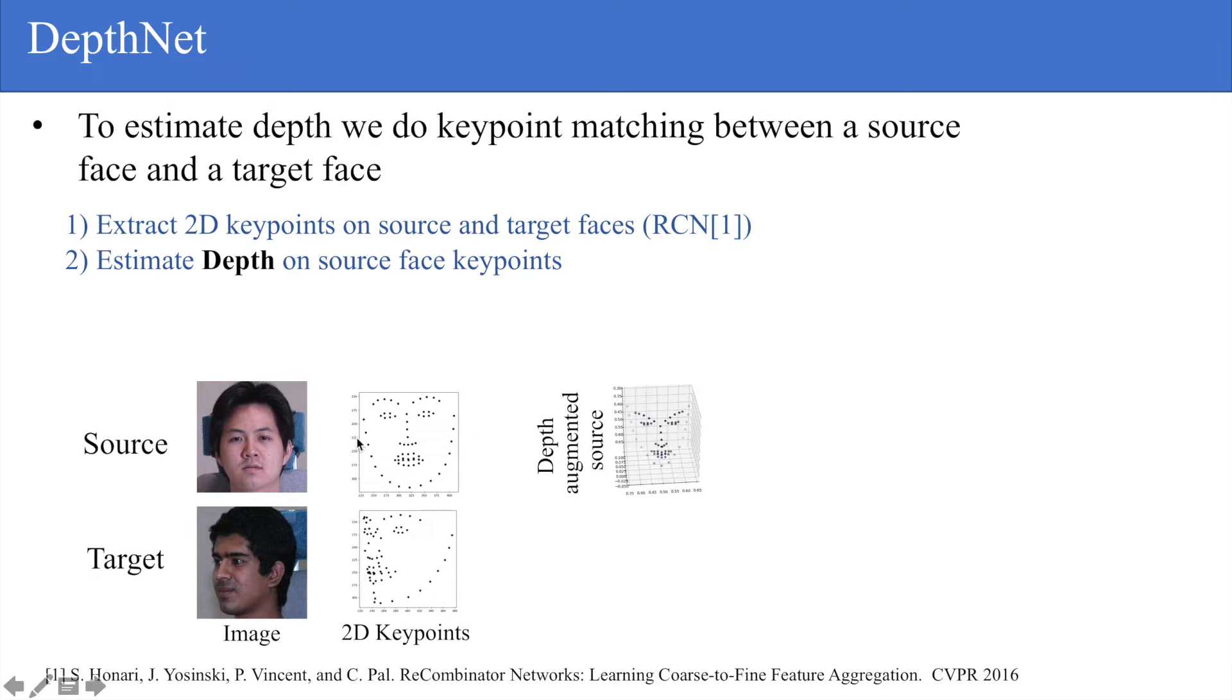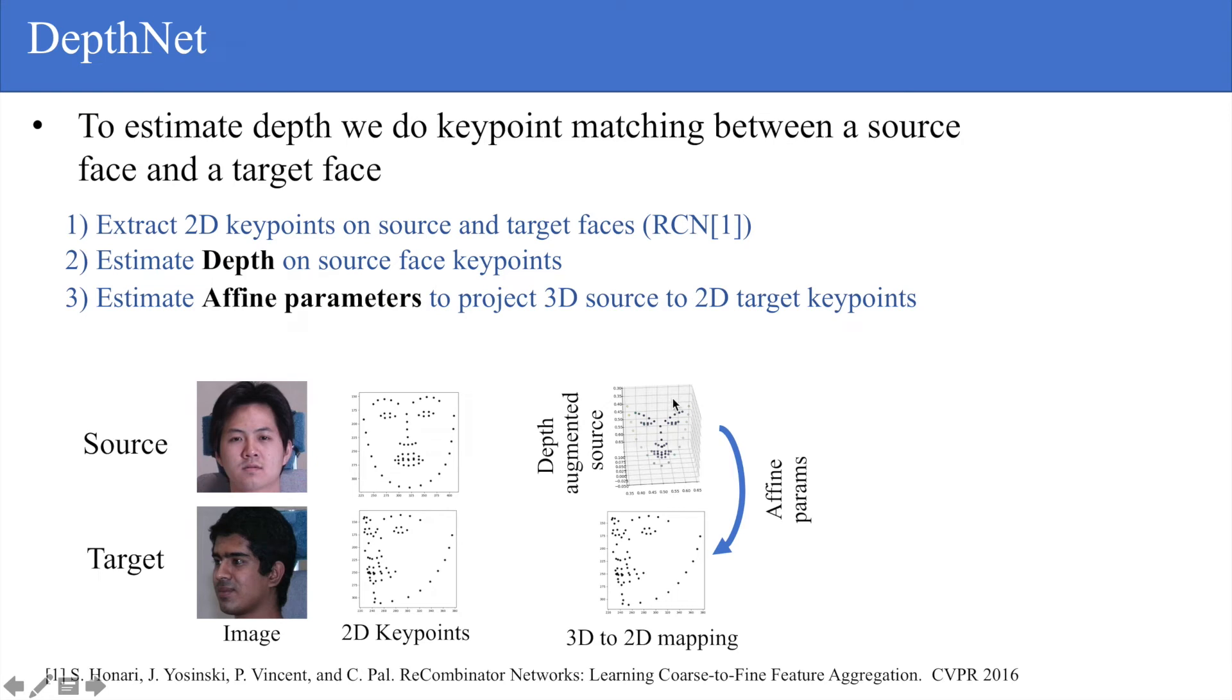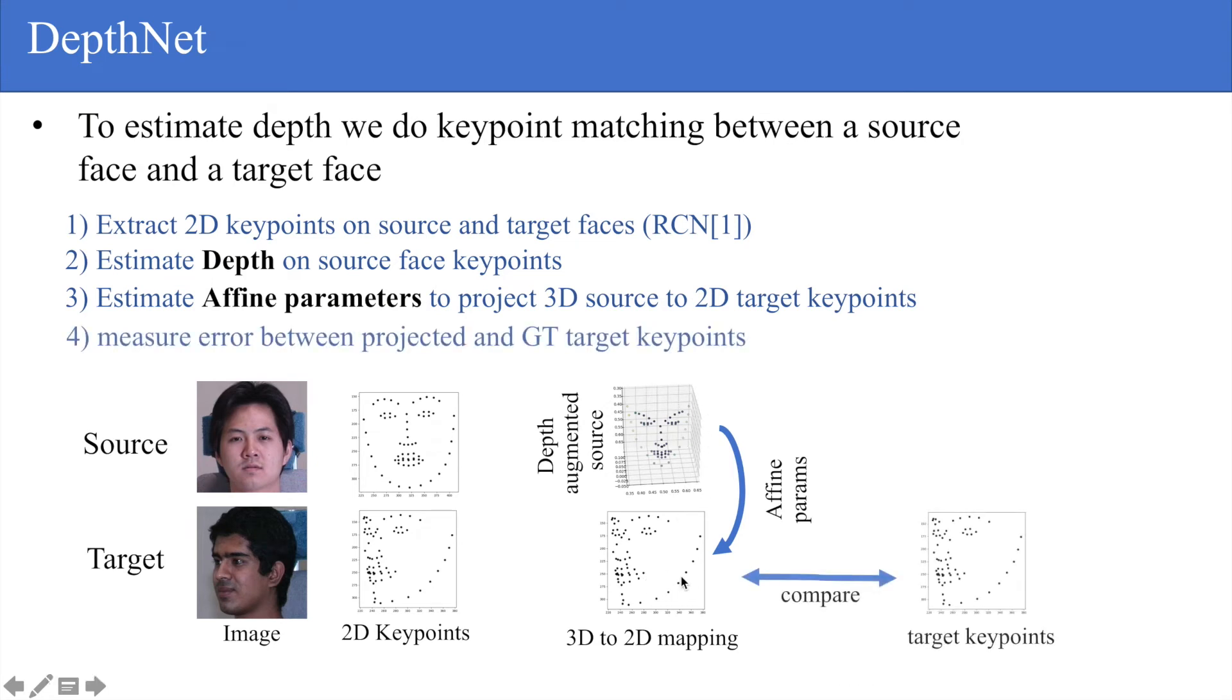Then we estimate depth on the source face keypoints, which is really just this but with the depth dimension added. We estimate affine parameters such that we can project this 3D source to the target keypoints, and then we measure the error between these projected keypoints and the target keypoints.